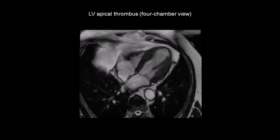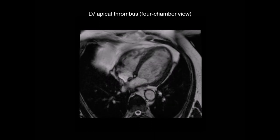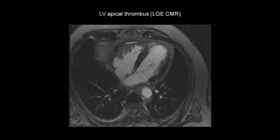It's a little hard to say in this view whether there's a thrombus — there's a little abnormality here, but it's hard to say for certain whether that represents a thrombus or not. So let's take a look at the late gadolinium enhancement image. Looking at the apex, it's not really evident that there's any thrombus there. But this case has been chosen to illustrate the importance of looking at the left ventricle in multiple different views.